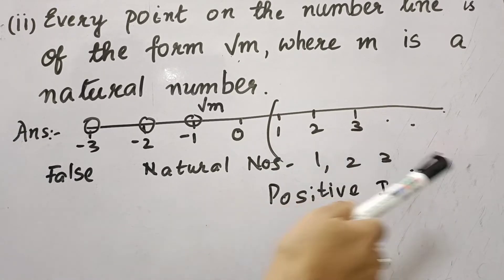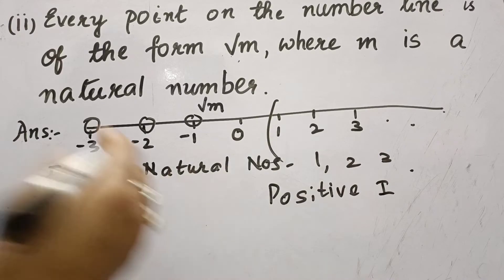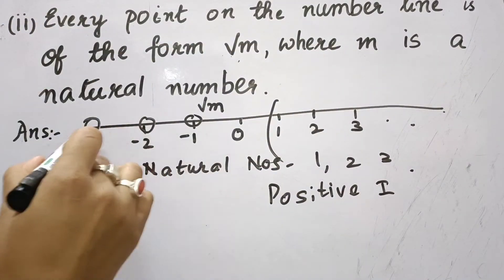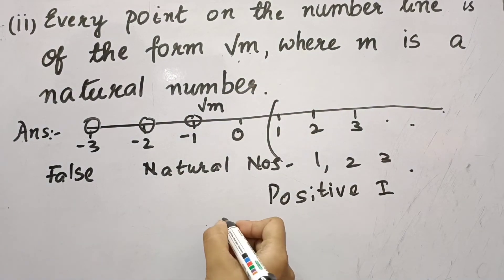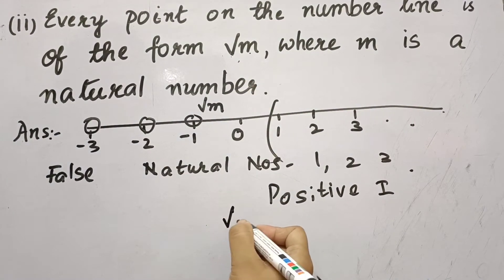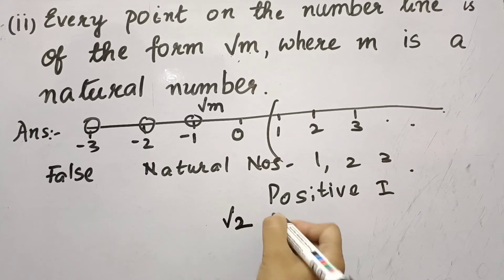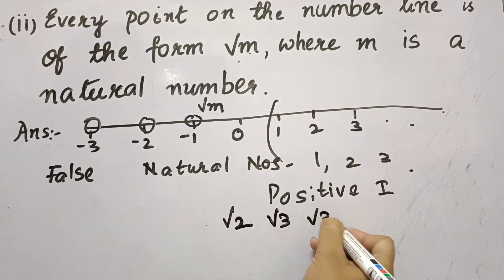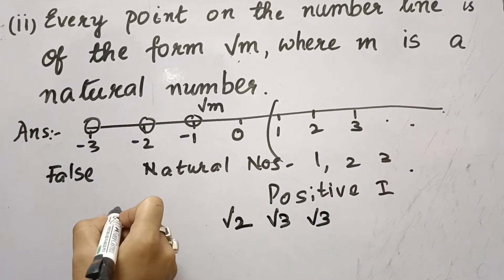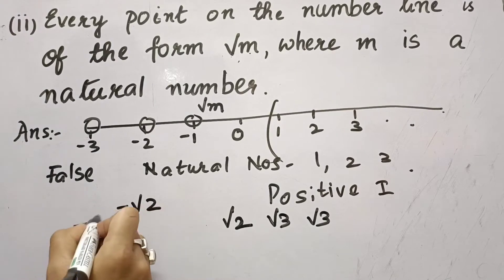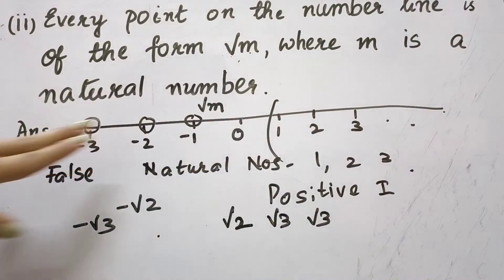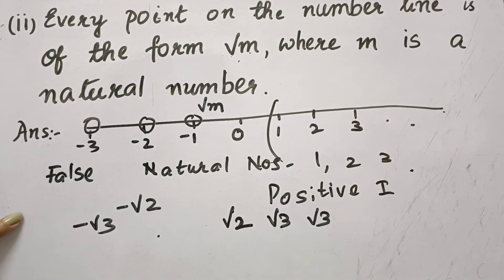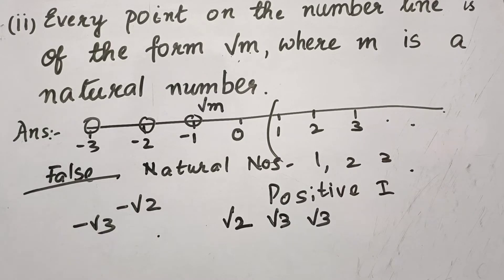√m can be √2, √3, and so on, but we can also have numbers like √(−2), √(−3), which are not natural numbers. So it is false that every point on the number line is of the form √m.